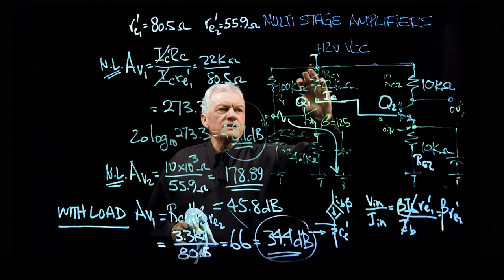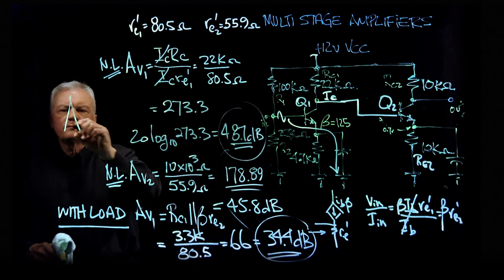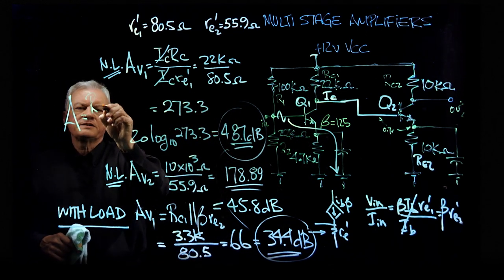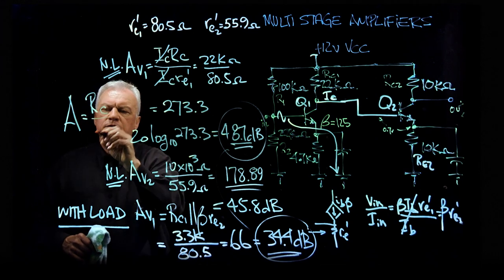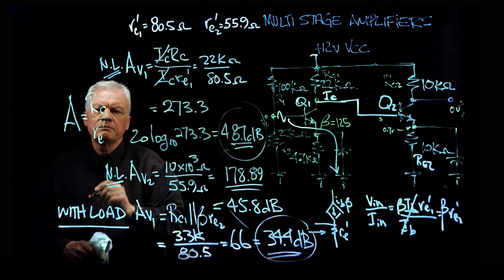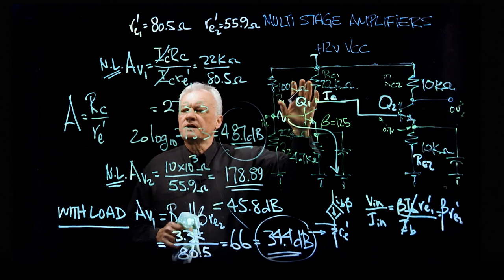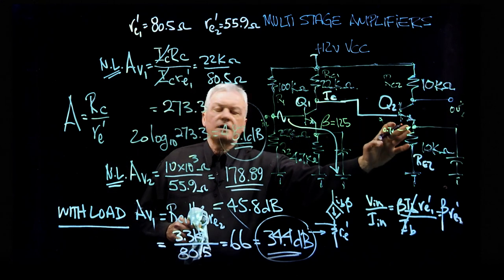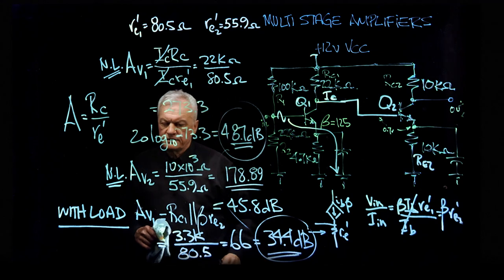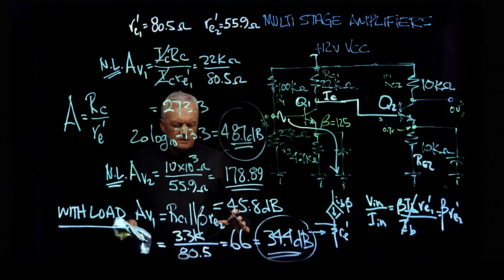And the story to understand, though, is that it's not just that RC. When you look at the formula, when you see the formula for gain, and you see RC over RE prime, this is a small c, which means it's an AC c, which means it's this in parallel with other loads that the AC signal sees.